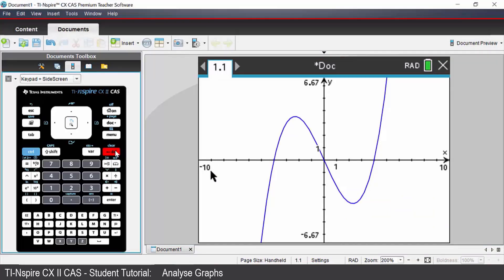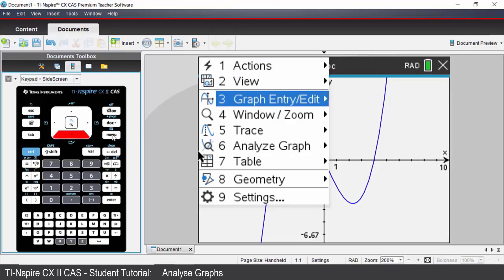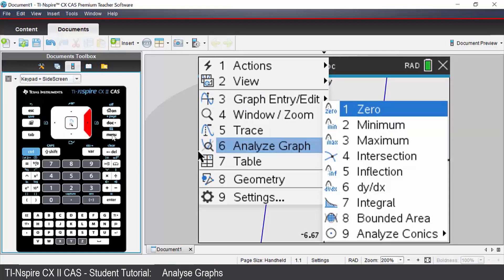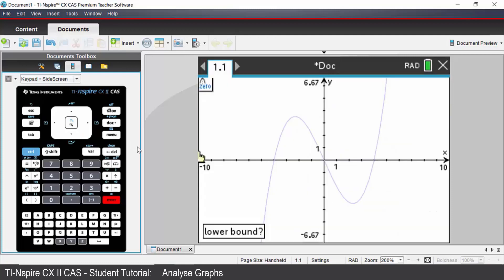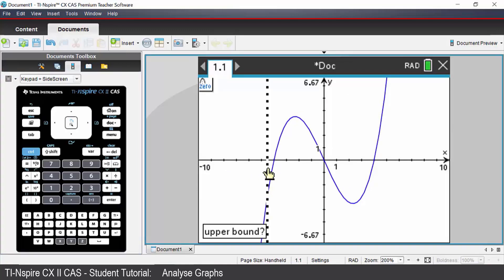The first thing that we will do is find the zeros or the x-intercepts of this cubic. To do that, everything is located under the menu key, so press menu. We come down to option 6 which is Analyze Graph, and our first option number one is zero. So select option one. Lower bound means just to the left of your first x-intercept or your zero, and you would click or hit enter.